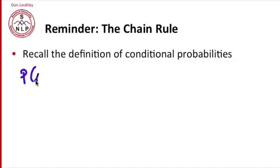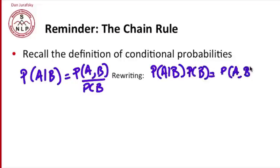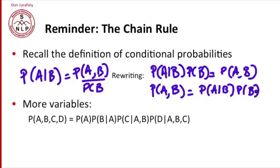And we can rewrite that. So P(A|B) times P(B) equals P(A,B). And then we can generalize this to more variables. So the joint probability of a whole sequence, A, B, C, D, is the probability of A times B given A, times C conditioned on A and B, times D conditioned on A, B, C. So this is the chain rule.